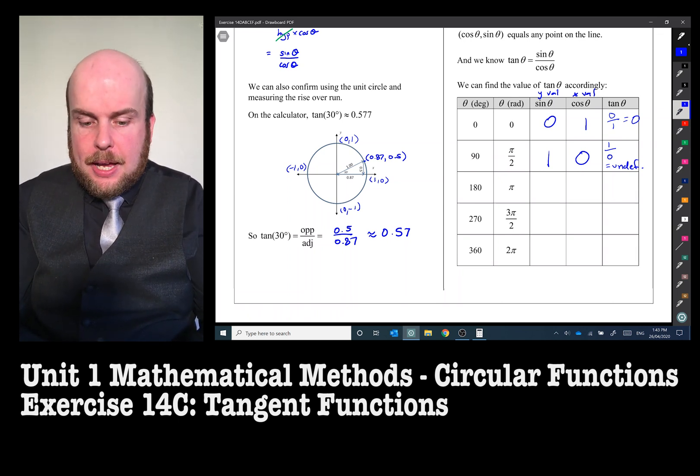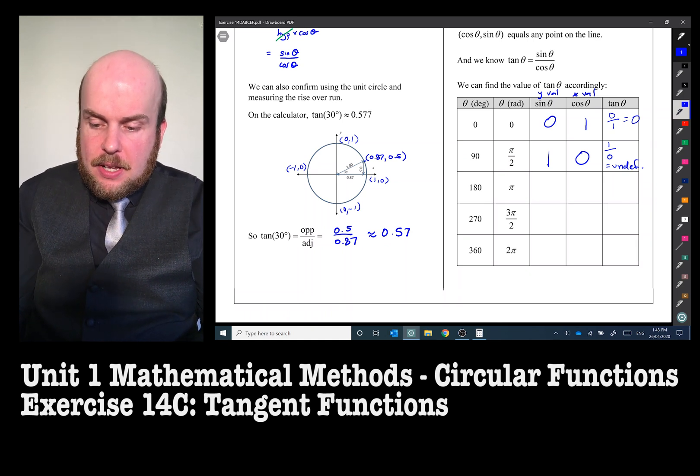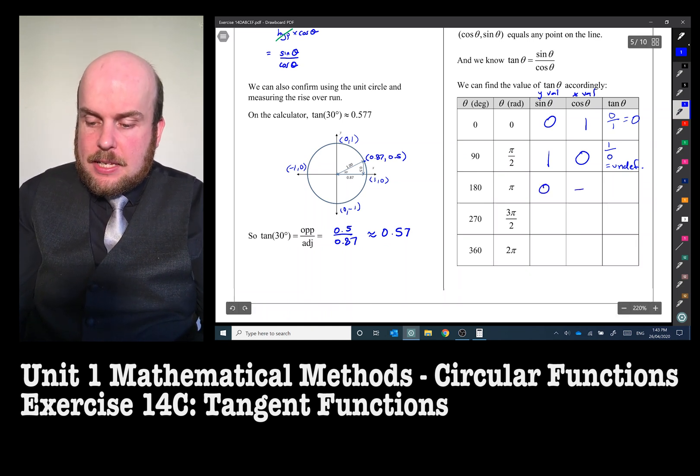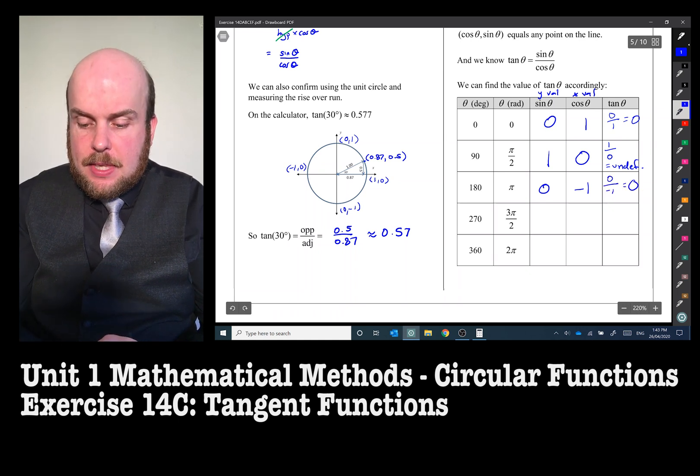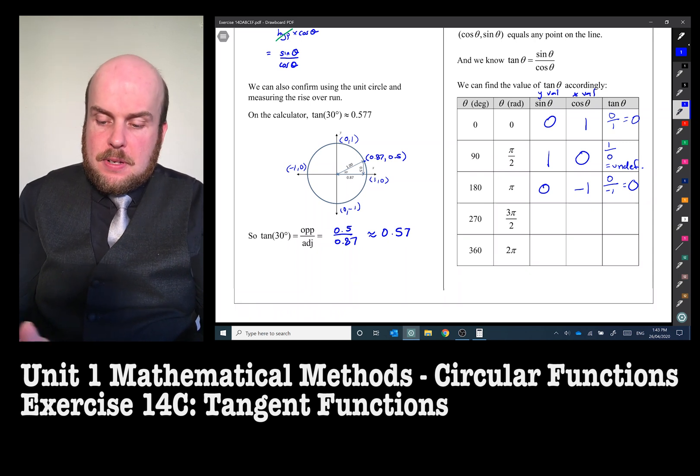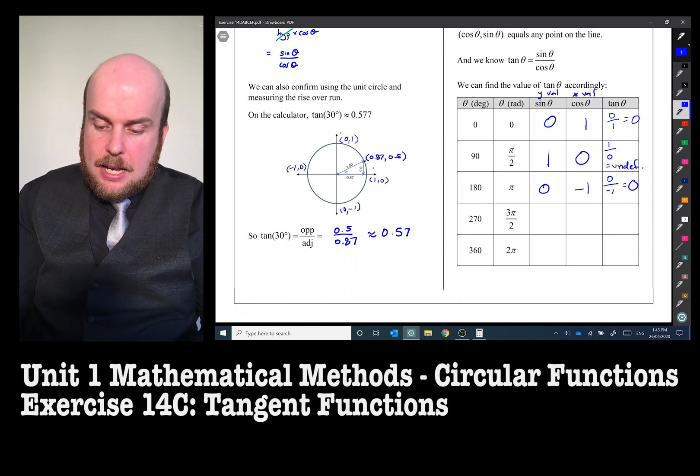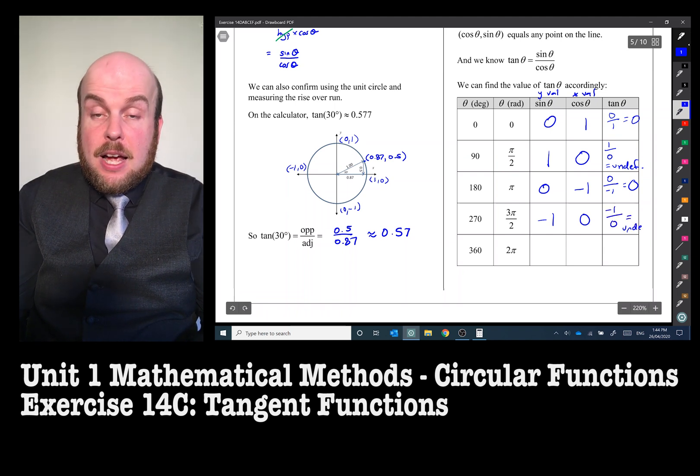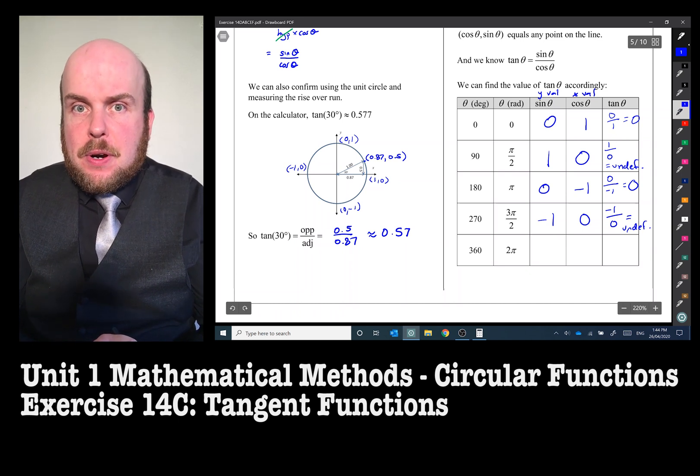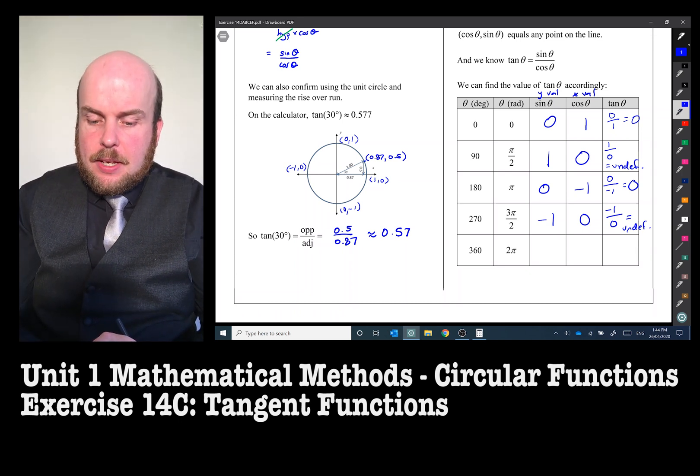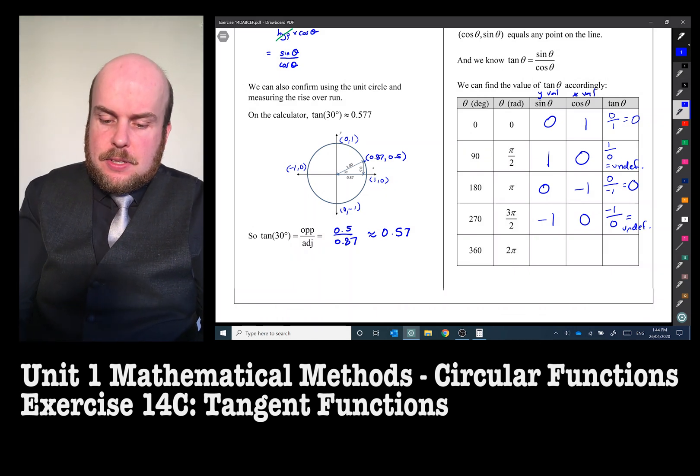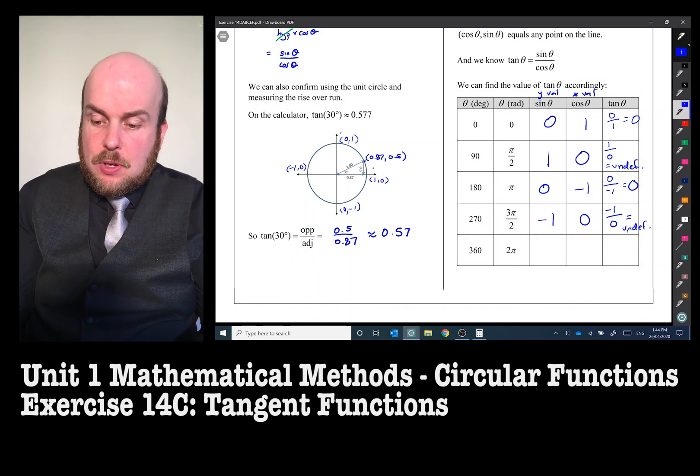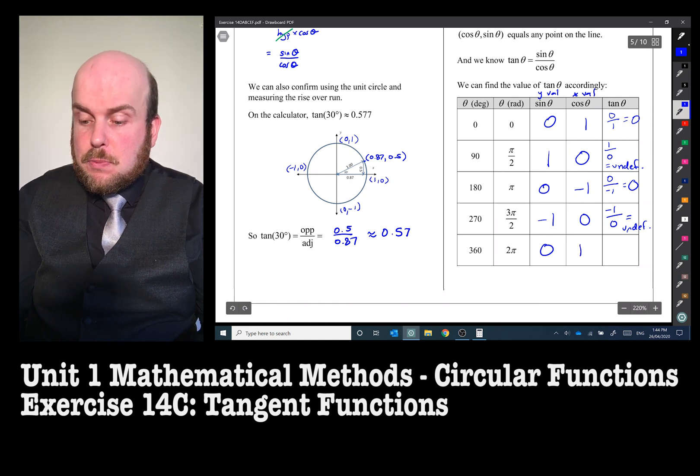180 degrees or π, the sine value is 0, the cos value is negative 1. So 0 divided by negative 1 is 0. 3π/2 is going to be negative 1, 0. Negative 1 divided by 0, of course, is also still undefined. Any time I try to divide by 0, that is undefined. 360° or 2π, that's back to our start. So the sine value is 0, the cos value is 1. 0 divided by 1 is 0.